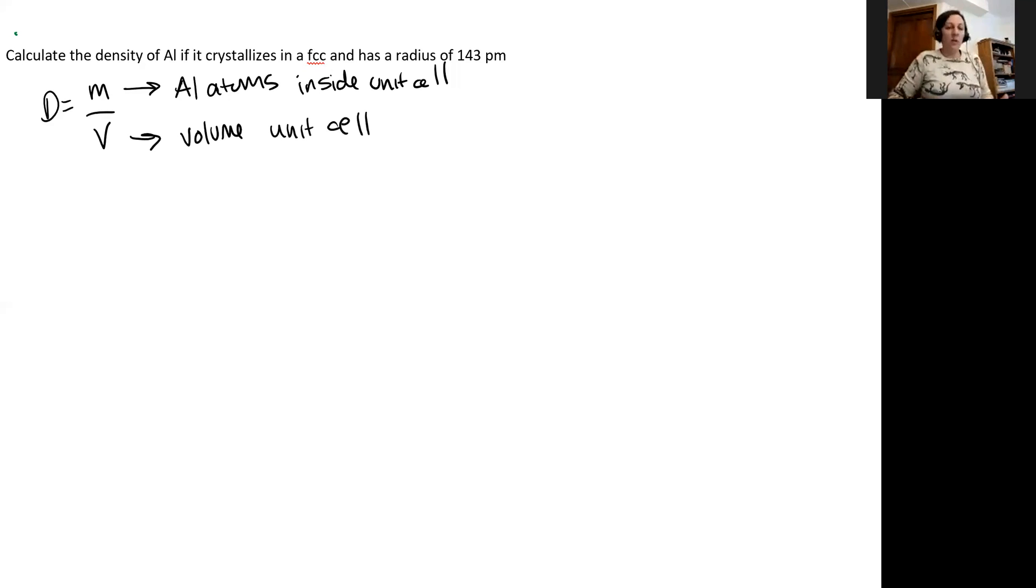So we're going to look at a face-centered cubic. So I like to kind of draw these. So a face-centered cubic is going to have one half of an atom on each face of the six sides of our cube, and it'll have an eighth of an atom on each of the corners. So that's kind of my drawing of that.